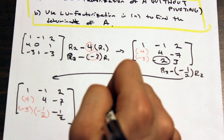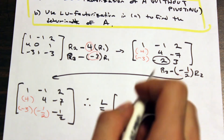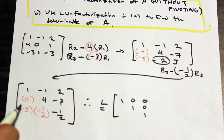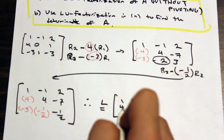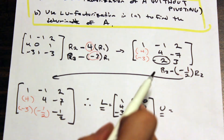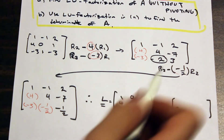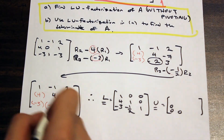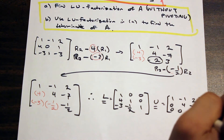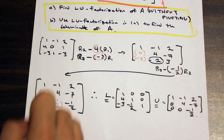Now we can write out L and U. For L, the main diagonal is all ones, the upper right triangular portion is zeros, and the lower left portion uses the red factors we recorded: 4, negative 3, and negative one half. For U, the lower left triangular portion is zero and we use all the remaining black entries: (1, -1, 2), (0, 4, -7), (0, 0, -1/2). That completes part A — LU factorization without pivoting.